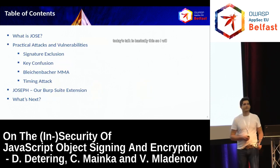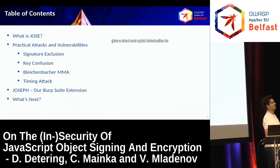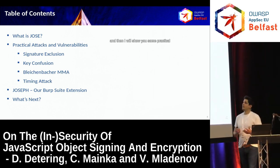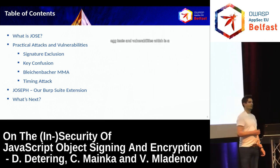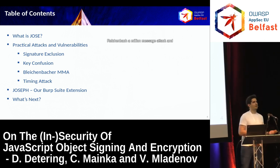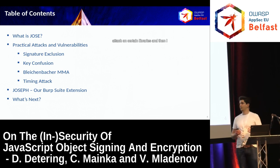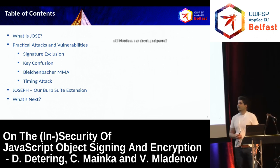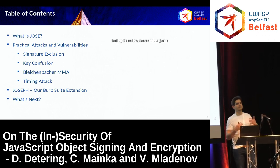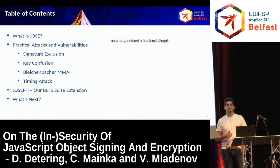What you might expect from today's talk is basically this. I will give a short introduction to what the JSON web family is. Then I will show some practical attacks and vulnerabilities: signature exclusion, key confusion, the Bleichenbacher million message attack, and if we have enough time also a timing attack on certain libraries. Then I will introduce our developed BurpSuite extension called Joseph to help testing those libraries, and then a short summary and outlook.